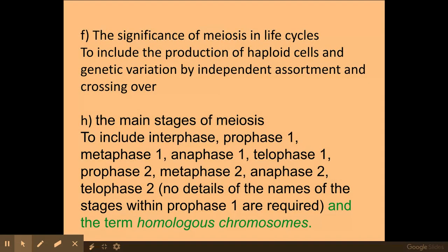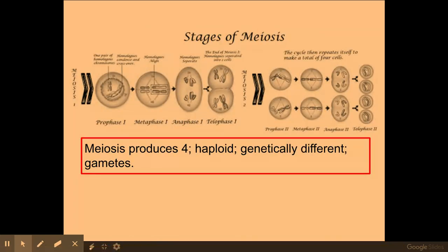Now we need to understand the point of meiosis — why do we need it? Meiosis is made up of two stages. Meiosis 1 is the reduction division, where I reduce the genetic information by half. At the end of meiosis 2, I produce four genetically different haploid gametes.